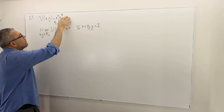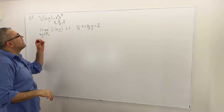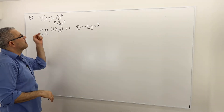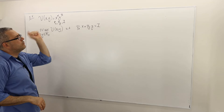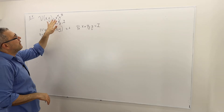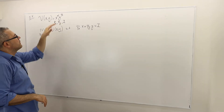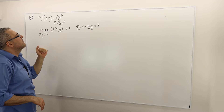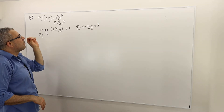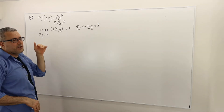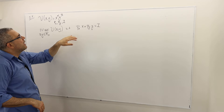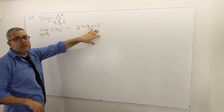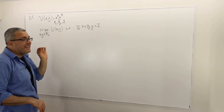This is an increasing utility function, meaning higher x and/or higher y is going to increase the utility. You can see this just by looking at it — there's no negative sign, and nothing is divided by x or y. Therefore, the budget constraint has to be satisfied with equality.